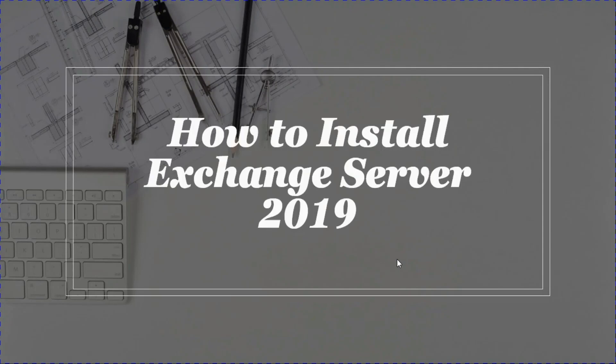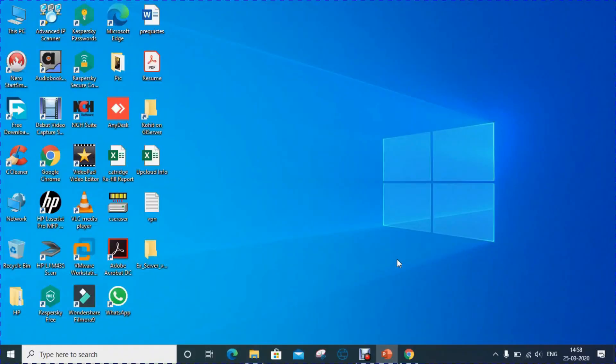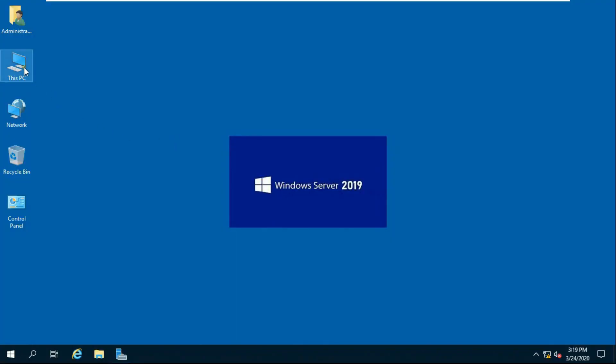How to install Exchange Server 2019. Windows Server 2019 prerequisites for Exchange Server 2019: .NET Framework 4.8, Microsoft Unified Communications Managed API 4.0, and Microsoft Visual C++ 2013 Redistributable Package. We will begin by installing these prerequisites.